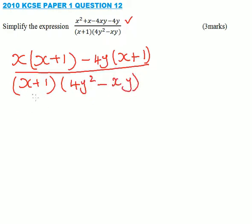So we factor out the x plus 1 in the numerator, so that means that you have x plus 1, you'll be left with x and minus 4y. So x minus 4y.